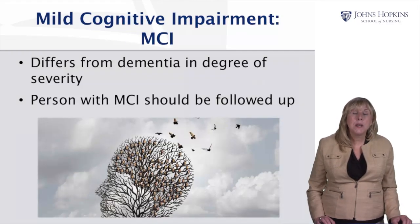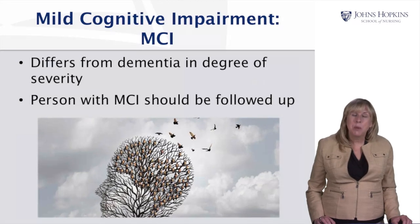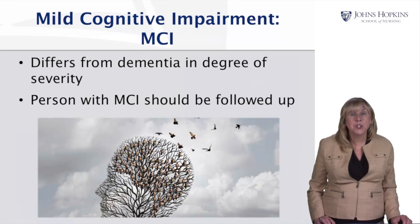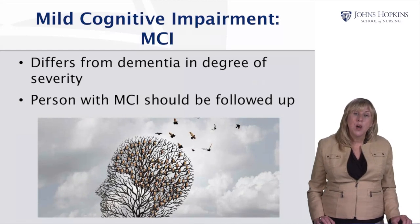Mild cognitive impairment is different from dementia in its degree of severity. Individuals with mild cognitive impairment have trouble with memory, but not to the extent that it interferes with their ability to carry out daily activities — they still retain functional ability to carry out their daily lives. However, individuals with mild cognitive impairment should be followed up closely, because they are at much higher risk for going on to develop dementia.